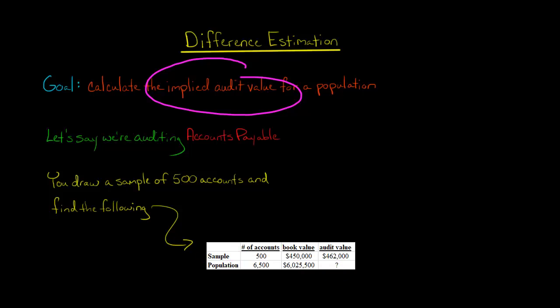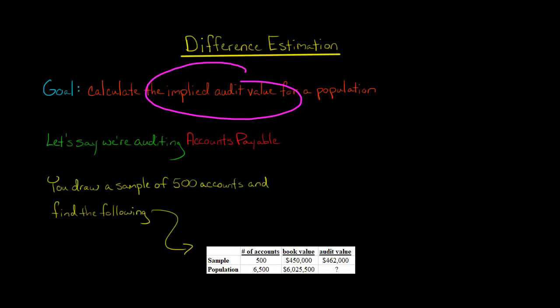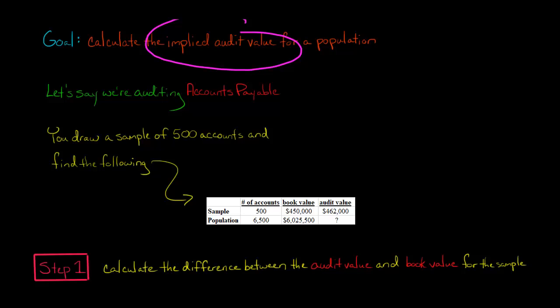With difference estimation, you can break it out into four steps. First, calculate the difference between the audit value and the book value for the sample. We have $462,000 minus $450,000, so we have $12,000.